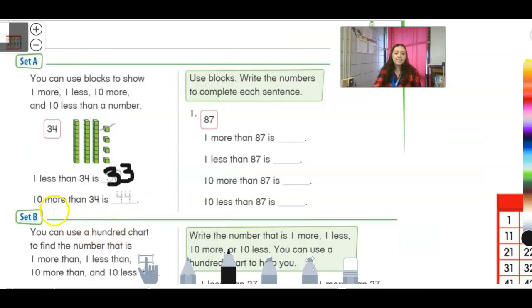All right and then it says 10 more. So what I could do to show 10 more, I could just draw another rod and then I could count it and say 10, 20, 30, 40, 41, 42, 43, 44. So I could write 44 right there. All right, now we're going to do something a little bit different, okay?